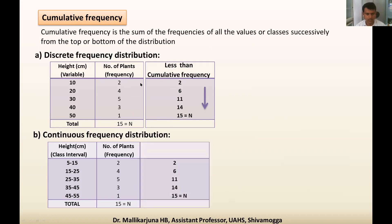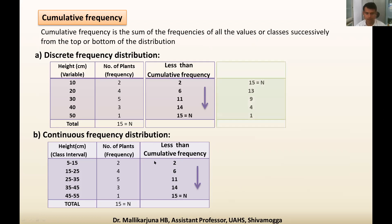Similarly for continuous frequency distribution we can have cumulative frequency: 2, 6, 11, 14, 15 — we get the same result since the frequencies are the same. This is also known as less-than cumulative frequency. Another type of cumulative frequency can be obtained by summing from the bottom.